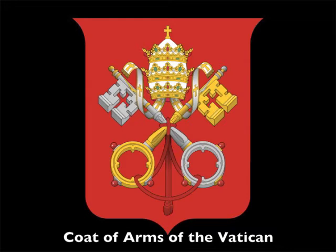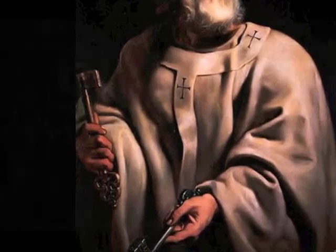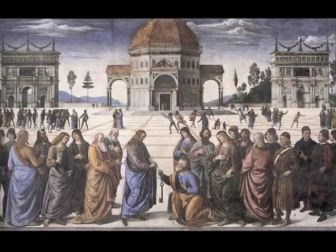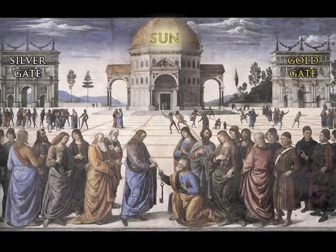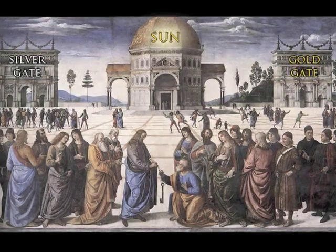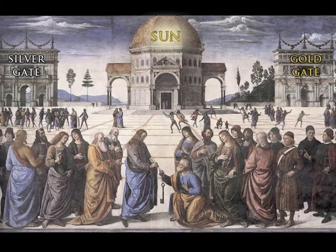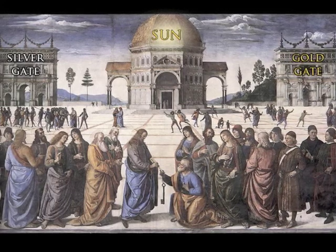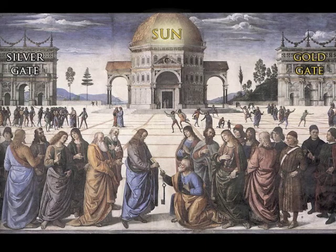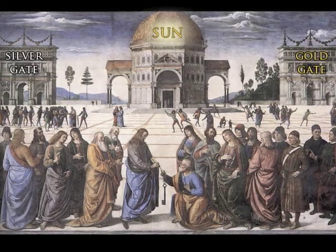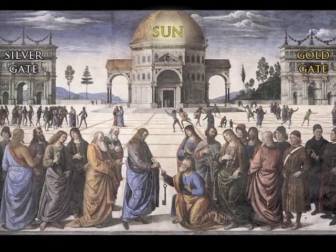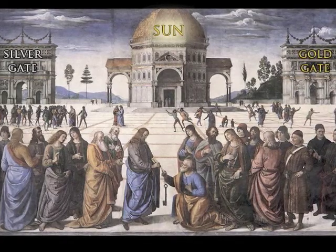The coat of arms for the state of Vatican City features silver and gold keys, because these are the keys to the kingdom that Christ gave to Peter. Pietro Perugino's fresco in the Sistine Chapel shows Christ giving one silver and one gold key to Peter. I see the two Roman arches flanking the fresco as secretly depicting the Egyptian silver and golden gates. The octagonal domed building in the center clearly represents the sun, and the perspective grid must be the ecliptic. The people in the piazza are taking the journey of the soul.